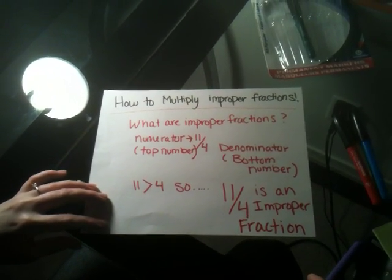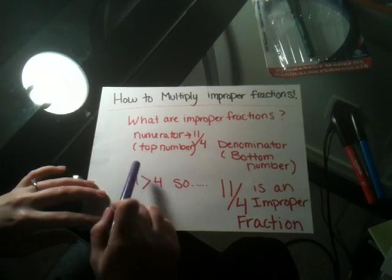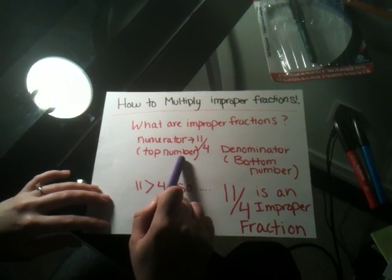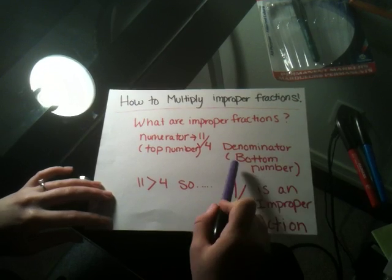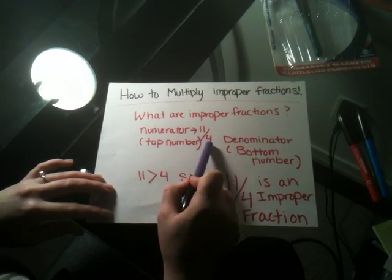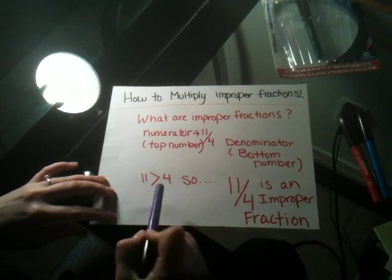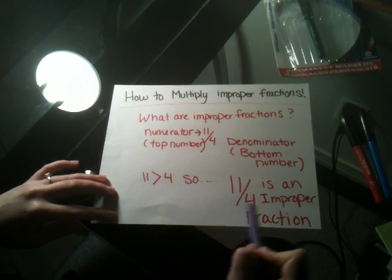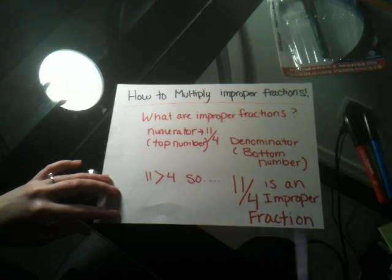Improper fractions are fractions where the numerator, the top number, is larger than the denominator, or the bottom number. In this case, 11 fourths is our fraction. 11 is greater than 4, so 11 fourths is an improper fraction.